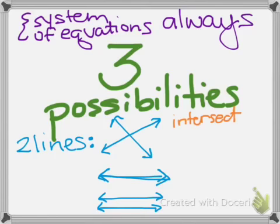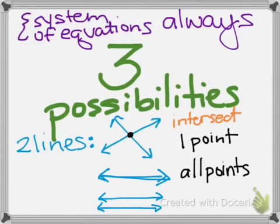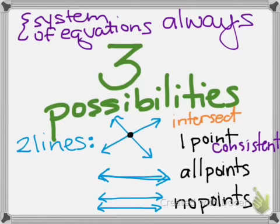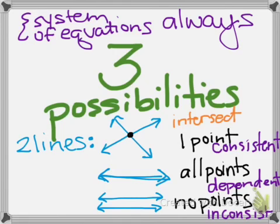So their intersections are going to be either at one point, at infinite points or all the points, or no points at all. And there are different names for these. The first one is if there's one intersection, it's called consistent. If there's no intersection, it's called inconsistent. And if it's all points, everything overlapping, it is called dependent.